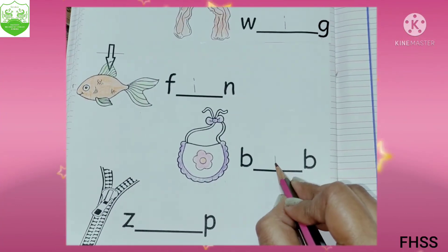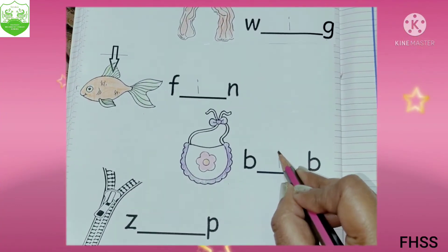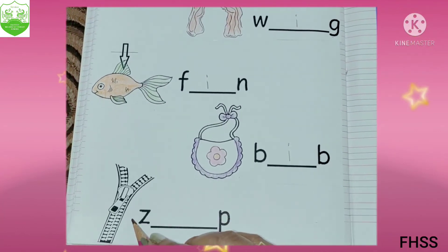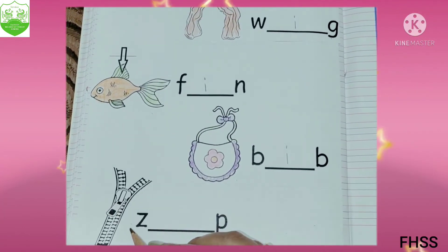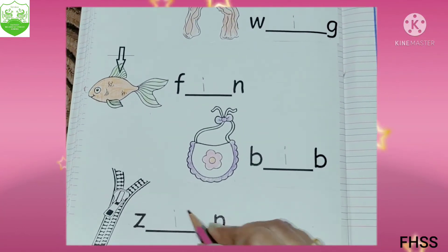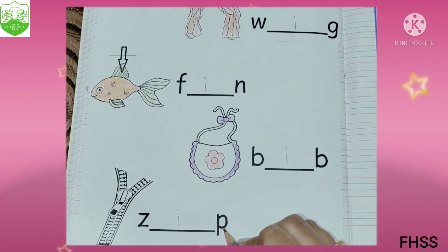Now this one is Bib. B, I, B — bib. Now look here, what is this? Zip. Z, I, P — zip.